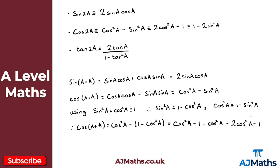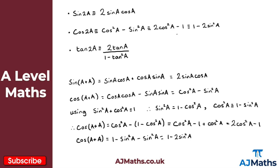Now substituting cos²a with 1 minus sin²a in the original expression cos²a minus sin²a, we get (1 minus sin²a) minus sin²a, which simplifies to 1 minus 2sin²a. That gives us the third form of the cosine double angle formula.